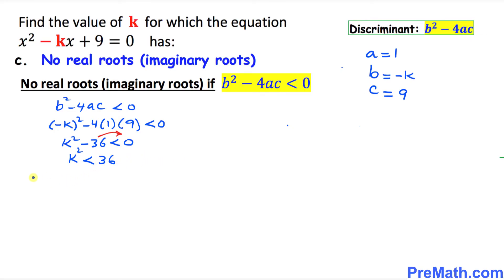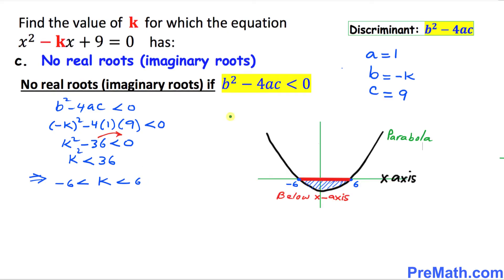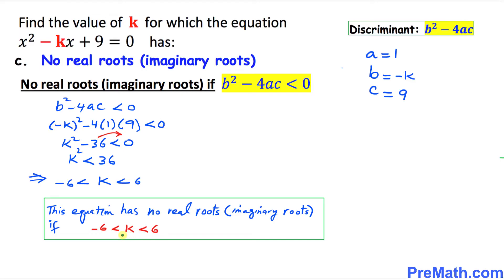If k squared is less than 36, then k is between negative 6 and positive 6. The function k squared minus 36 represents a parabola. Since it is less than 0, we look at the region below the x-axis, which is only the part restricted between negative 6 and positive 6 — just like a sandwich. So our answer is negative 6 is less than k is less than positive 6.